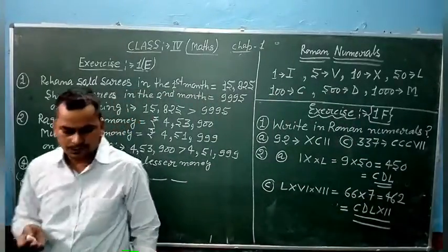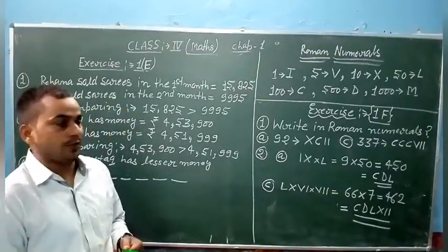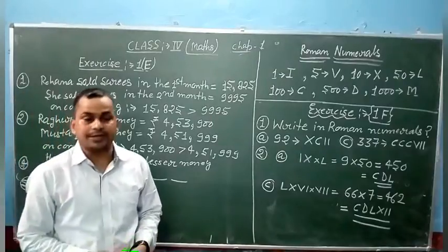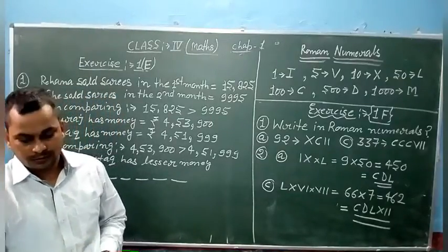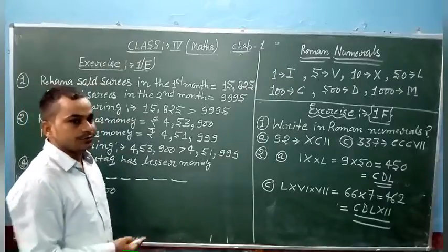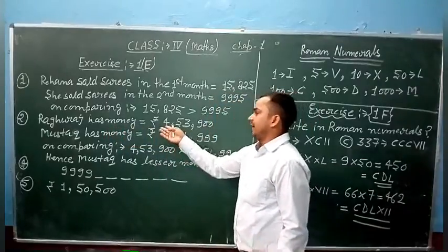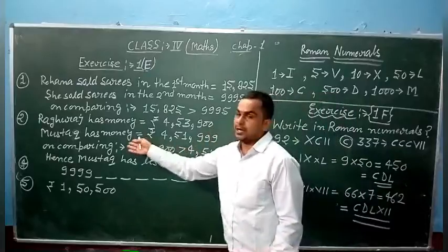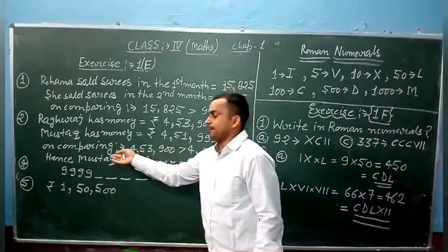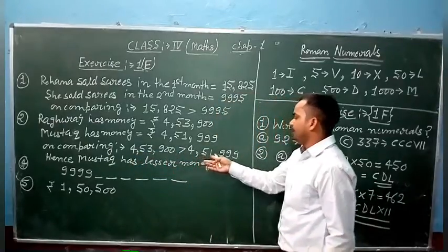Question number 2: Harris has 453,999 rupees in his bank account, so where does the house servant have money? Harris has 453,900 and Mustafa has 451,999.